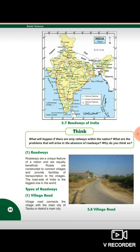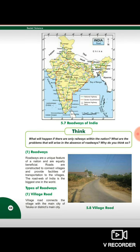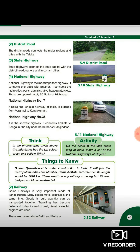Pahala hum padhenge village road. Village road connects the main village with the main city of the Taluka or a district main city. Ab village road jo banaya jata hai, woh main city — jo shaher hai, Taluka ka jo main shaher hootai ya toh district ki jo main city hootai hai — usse connected hootai hai.